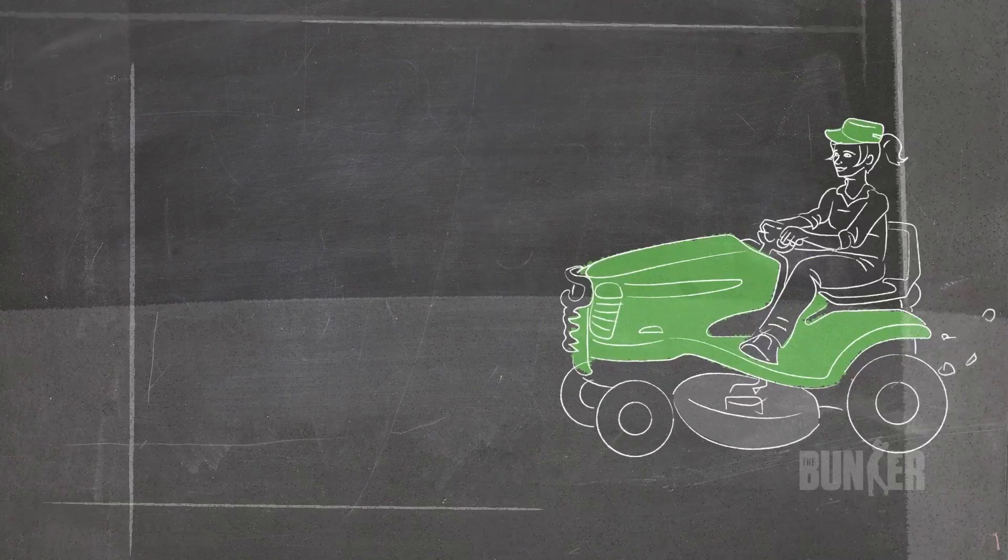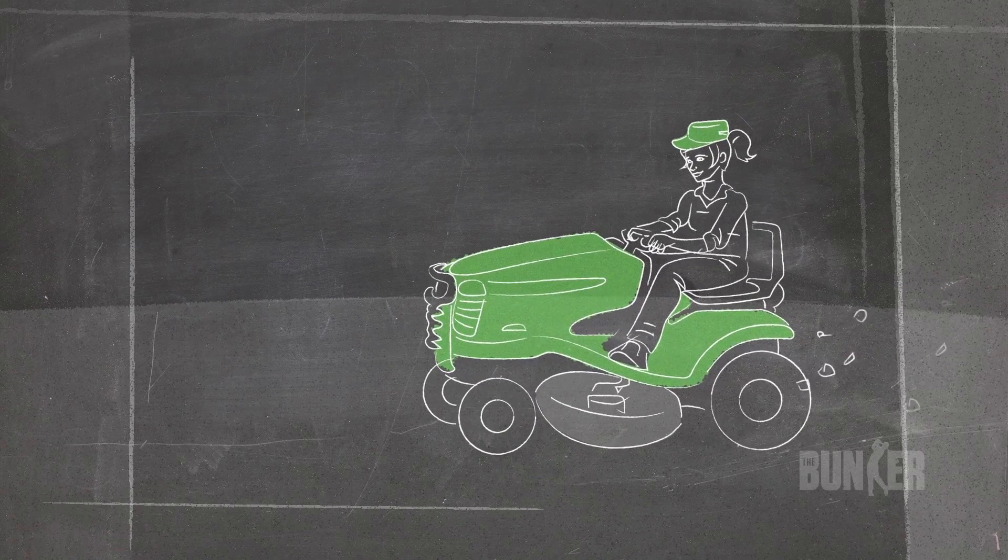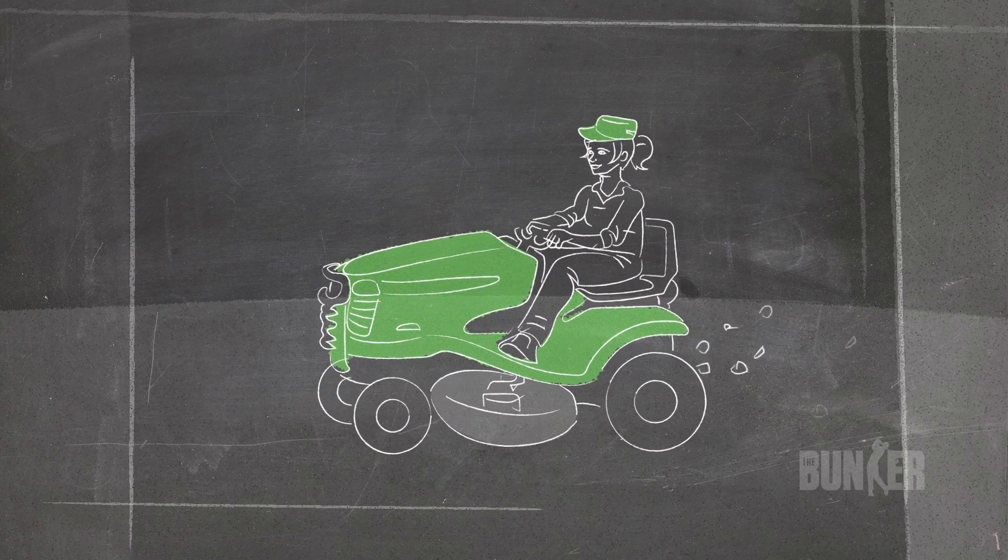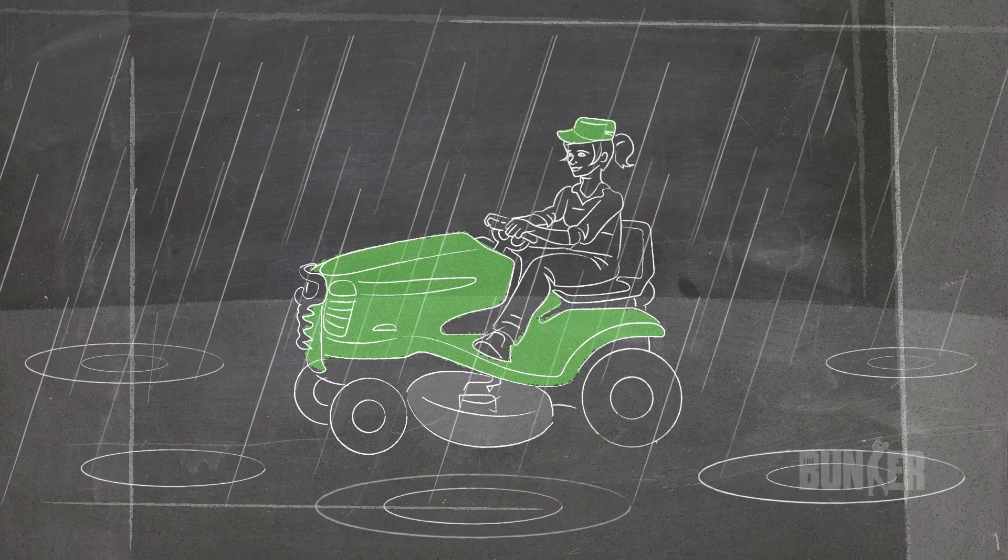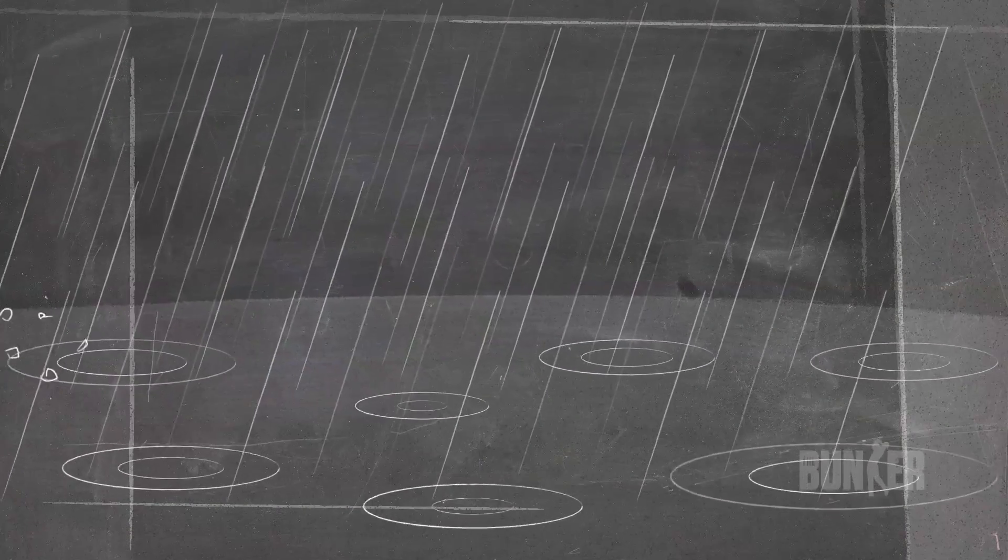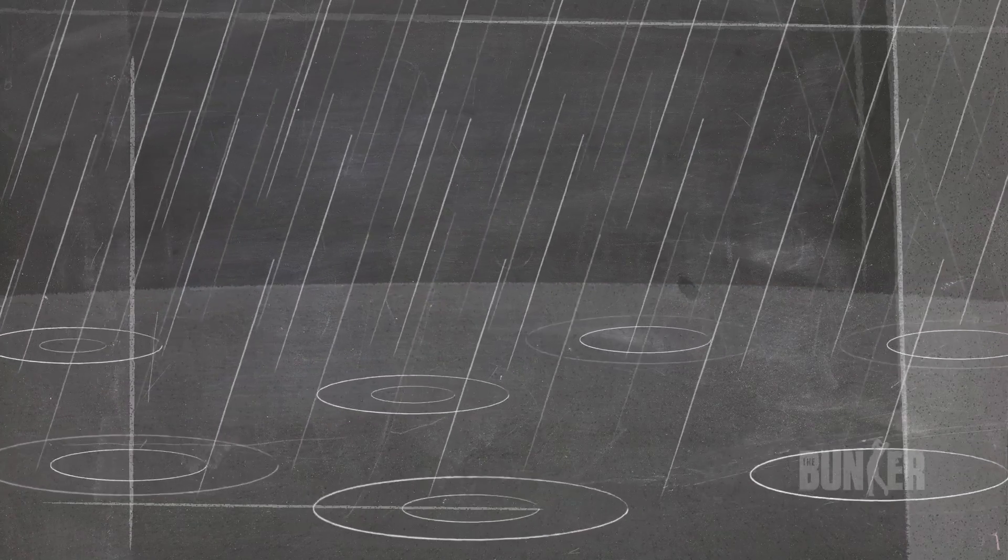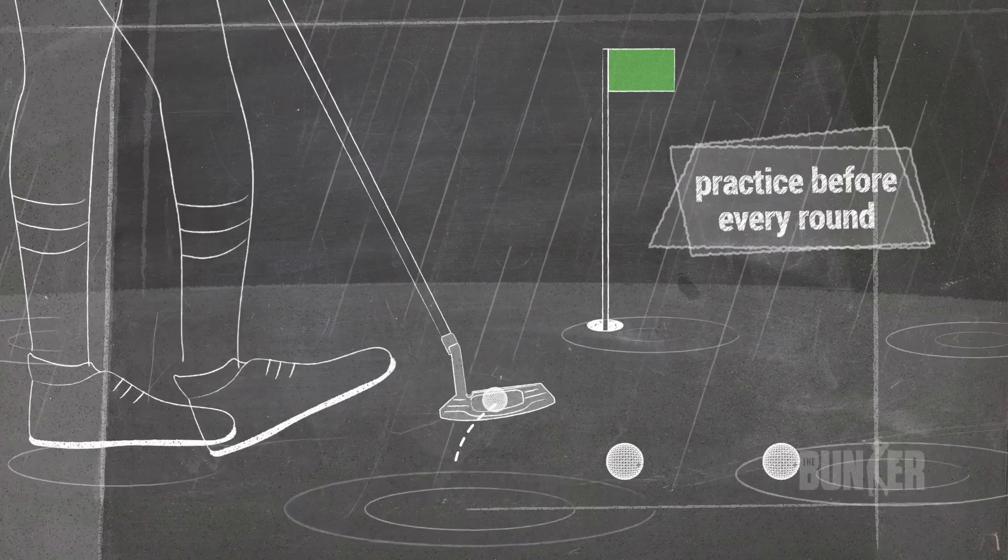So what affects green speed? There are two main factors: firstly, the course maintenance including rolling and mowing, and secondly, the environment such as the weather and the types of grass and soil. It's important to adjust for green speed.